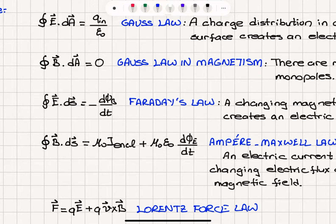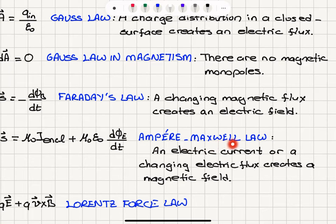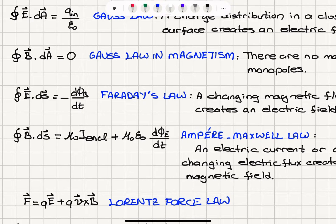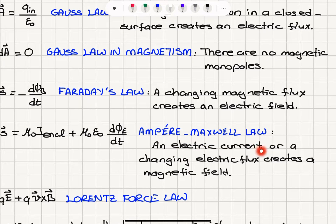Finally, we have the fourth Maxwell equation. The path integral B dot dS is equal to mu-zero times I enclosed by that surface, plus mu-zero epsilon-zero — the permittivity and permeability of free space — times d-phi-E/dt, the rate of change of electric flux. This is known as the Ampere-Maxwell law. The mu-zero epsilon-zero d-phi-E/dt term was added by Maxwell, and it says that an electric current or a changing electric flux creates a magnetic field.